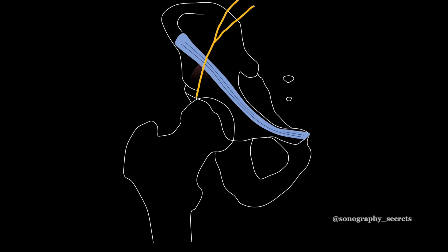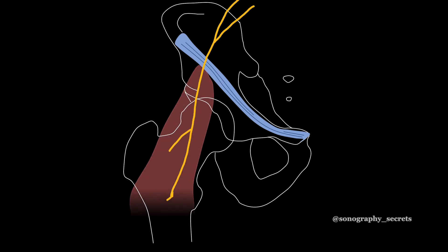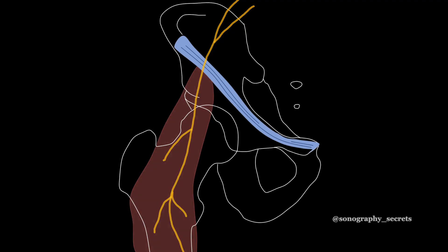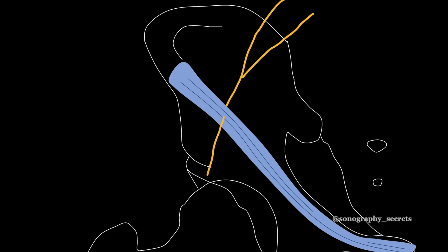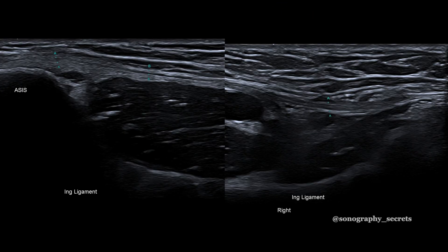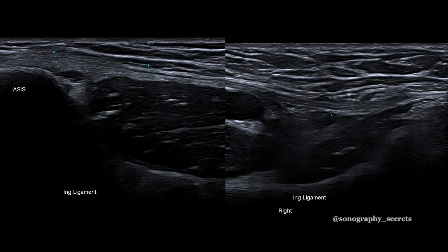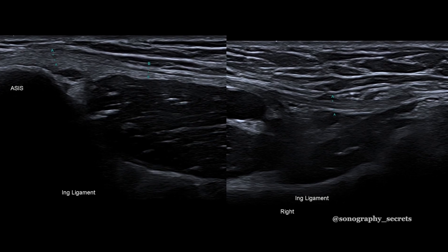The lateral femoral cutaneous nerve supplies the skin of the anterior lateral thigh. It can pass over, under, or through the inguinal ligament. To identify the nerve, I use the inguinal ligament as my landmark.